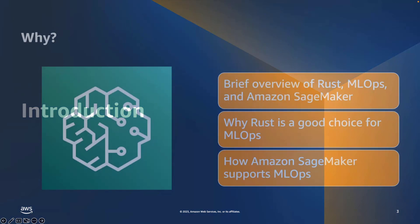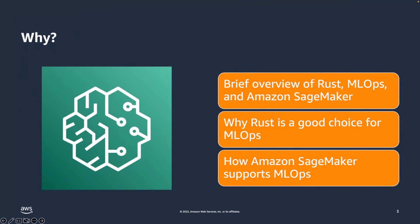So first up, why do we care about Rust? Rust, ML Ops, and Amazon SageMaker are a great combination. Rust itself is a great choice for ML Ops due to its strength in binary deployment. And SageMaker has great support for ML Ops.